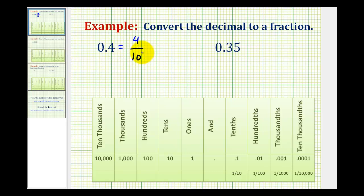Once the decimal is in fraction form, we do need to simplify. Notice that 4 and 10 do share a common factor of 2, so we can divide both the numerator and denominator by 2 to simplify the fraction. So 0.4 as a fraction would be 2 fifths.